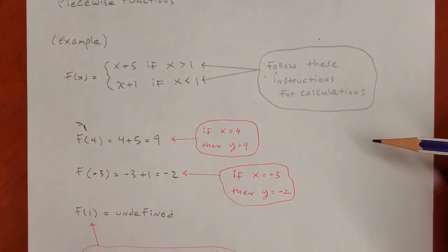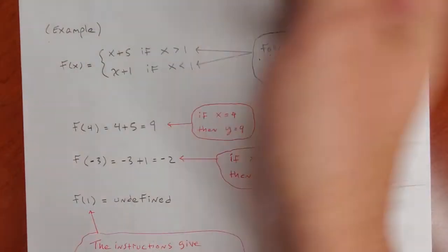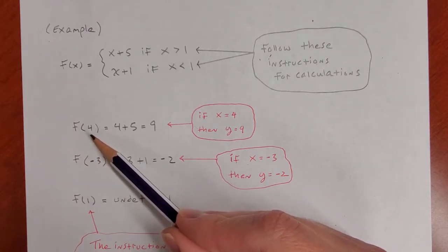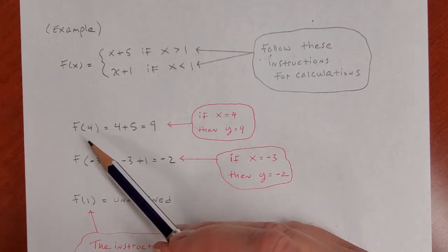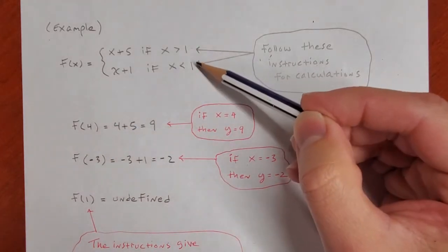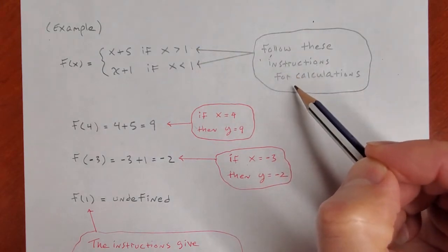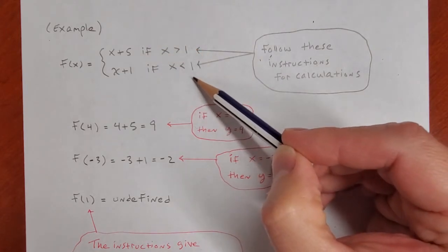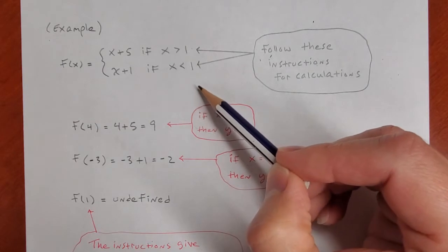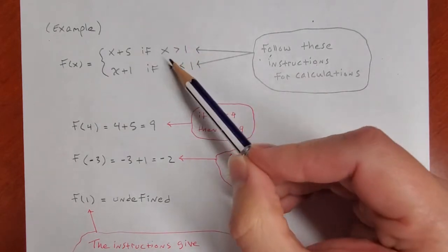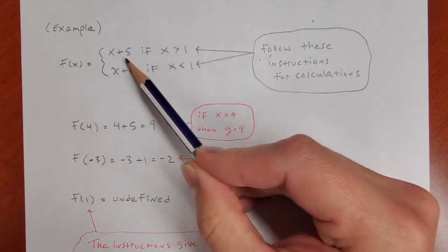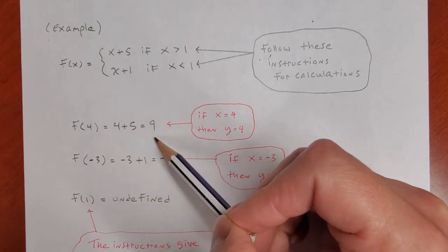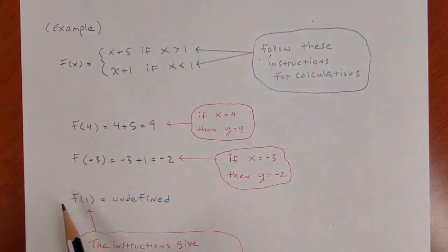For concrete examples: to evaluate f(4), let x be 4 and find y. Which condition does 4 fall under — is 4 bigger than 1 or less than 1? Well, 4 is bigger than 1, so we use the formula y = x + 5 to calculate f(4). That gives us 4 plus 5, which equals 9.